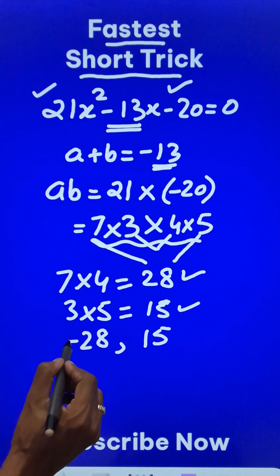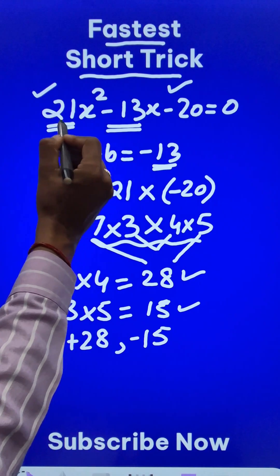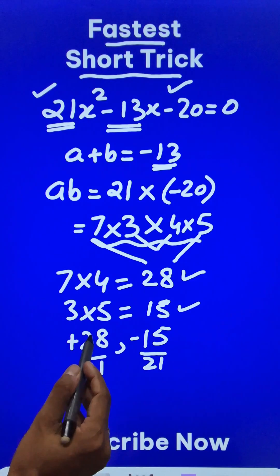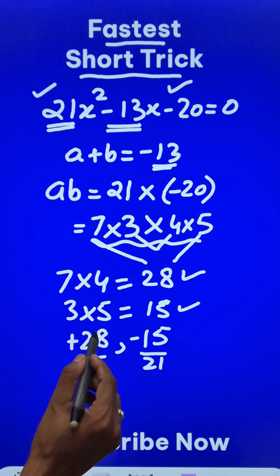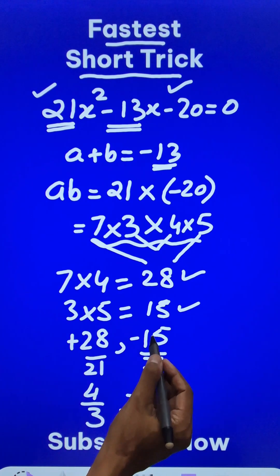After getting the middle term split factors, just change the sign—this becomes plus and this becomes minus—and divide by the coefficient of x², which is 21. You'll be surprised that when you reduce it to the lowest form, this will give you 4/3, and this will give you -5/7.